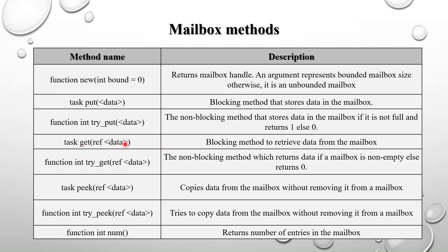The get method — task get(data) — is used to retrieve data from the mailbox, getting whatever was stored first (FIFO order). It is a blocking method, similar to the put method. The try_get method is the non-blocking equivalent — it returns one if the mailbox is non-empty and data is retrieved, or zero if the mailbox is empty.